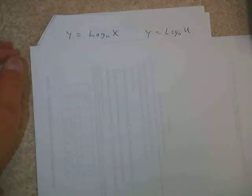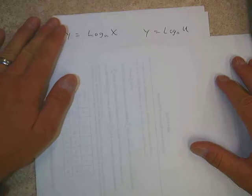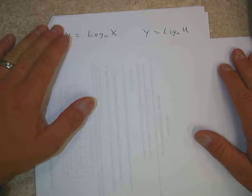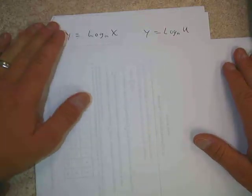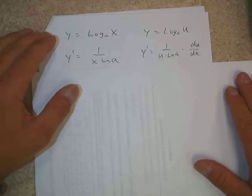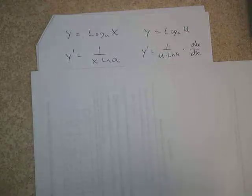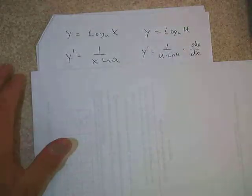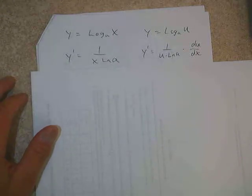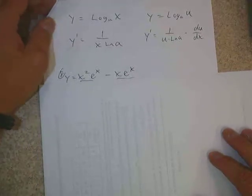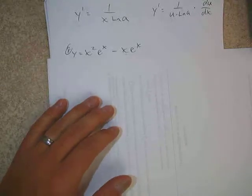For a general logarithm with a base other than e — like log base 10 or log base 5 — we can also find derivatives. The rule is: if we have log base a of x, the derivative is 1 over x·ln(a). In chain rule form with log base a of u, it's 1 over u·ln(a) times du/dx.